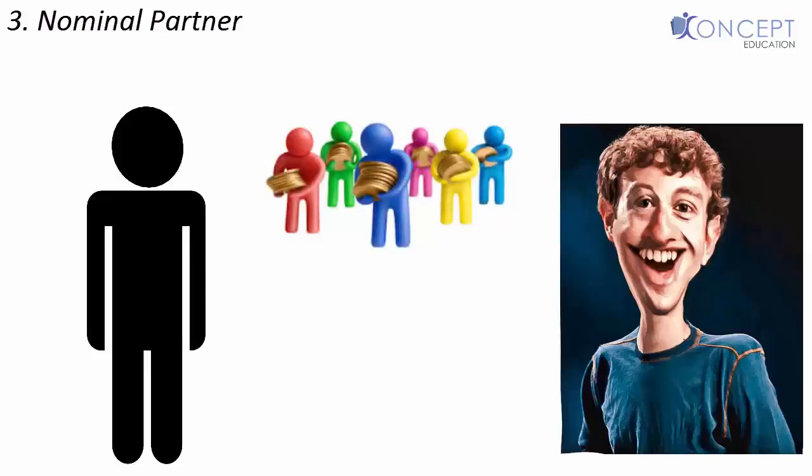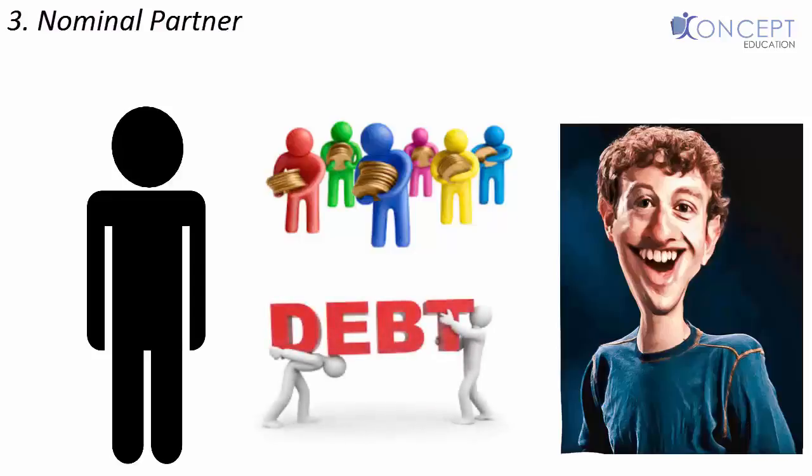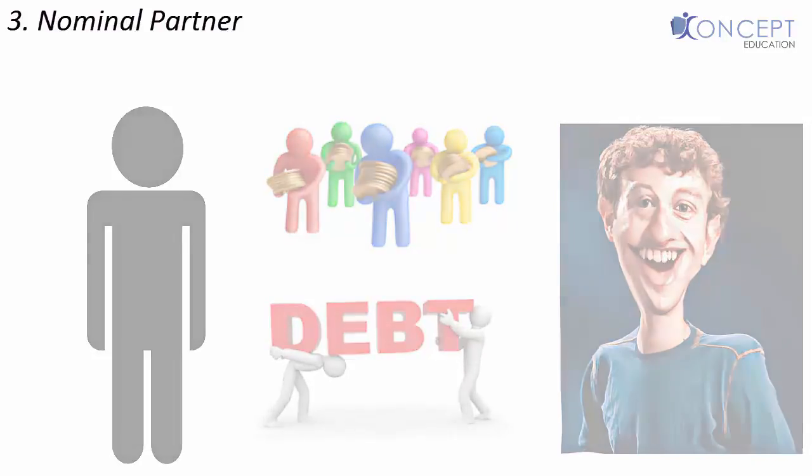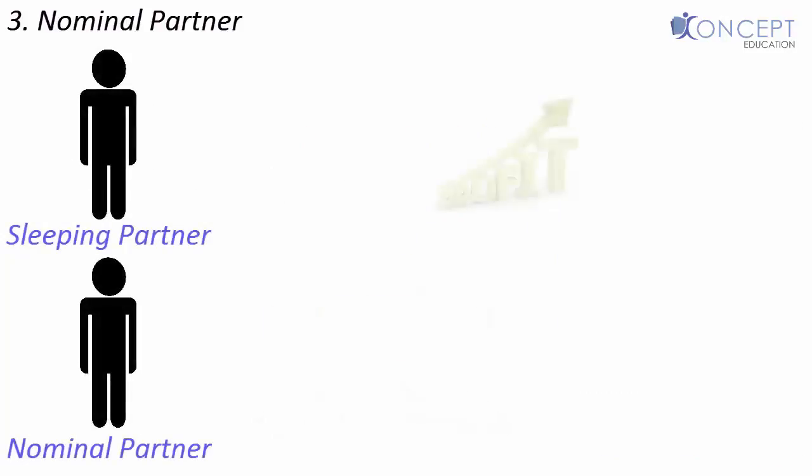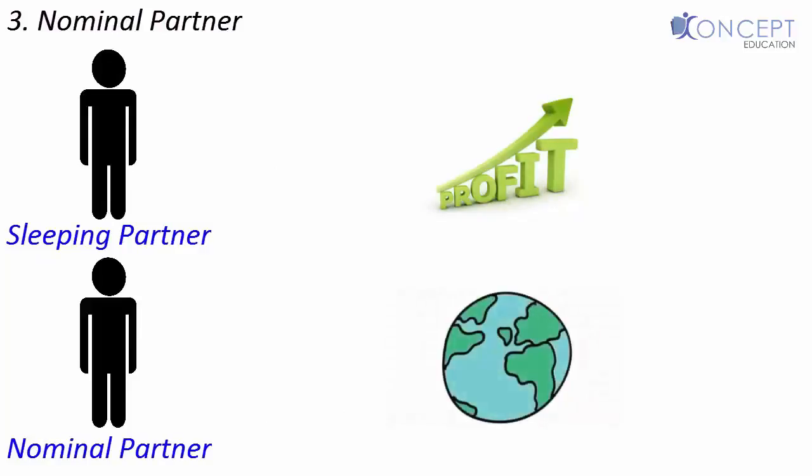However, nominal partners are liable to the outsiders for any debts of the firm. Nominal partners are separate from sleeping partners. Nominal partners don't share profits of the firm but are known at large to the world, while sleeping partners are sharing profits and their existence is kept private. But both are liable to the outsiders for the debts of the firm.